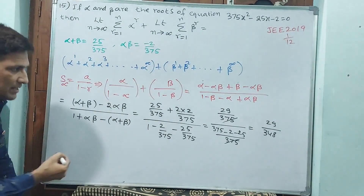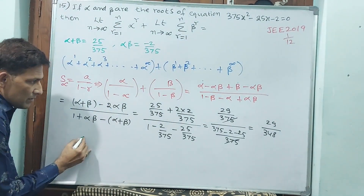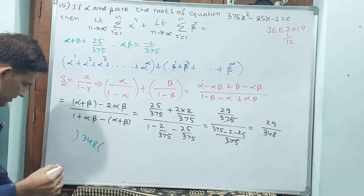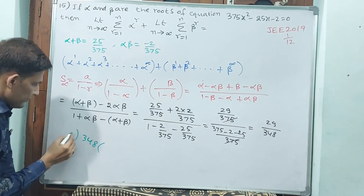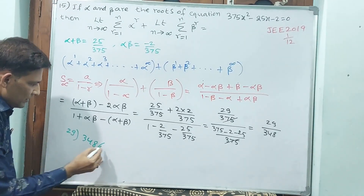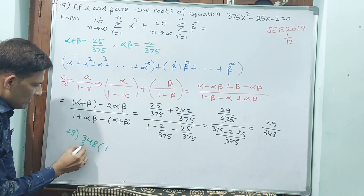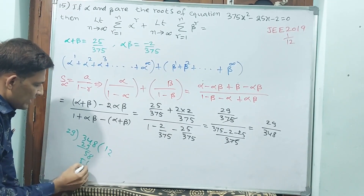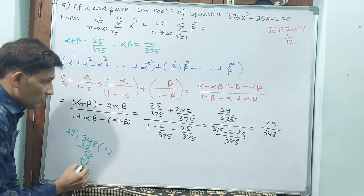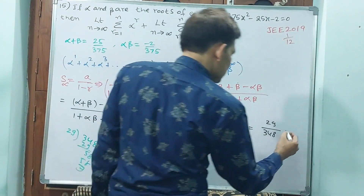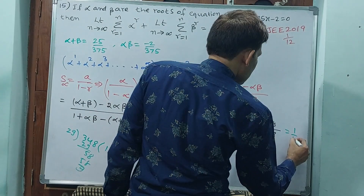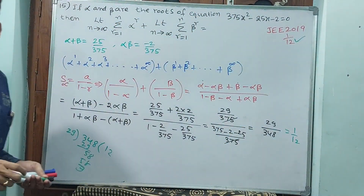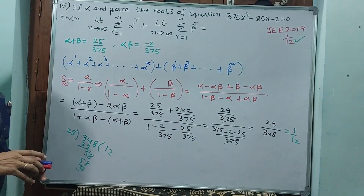Now simplify 29 by 348: 29 ones are 29, 29 twos are 58 — so 348 divided by 29 is 12. That means the answer is 1 by 12. That is your answer. Let us go to the next question.